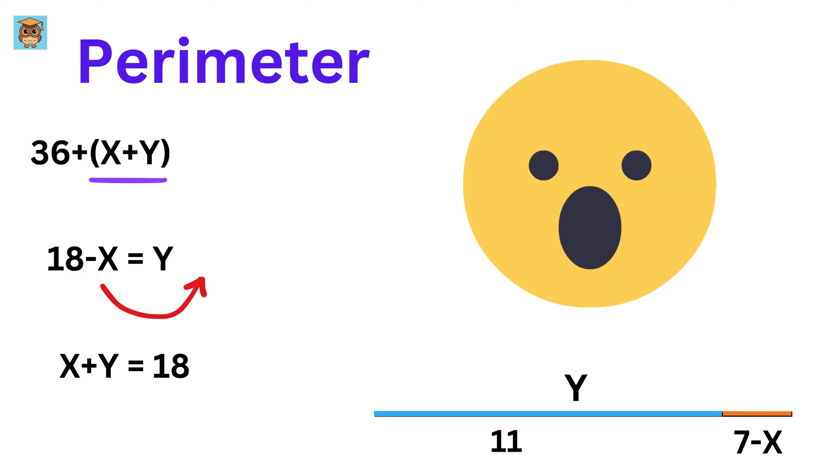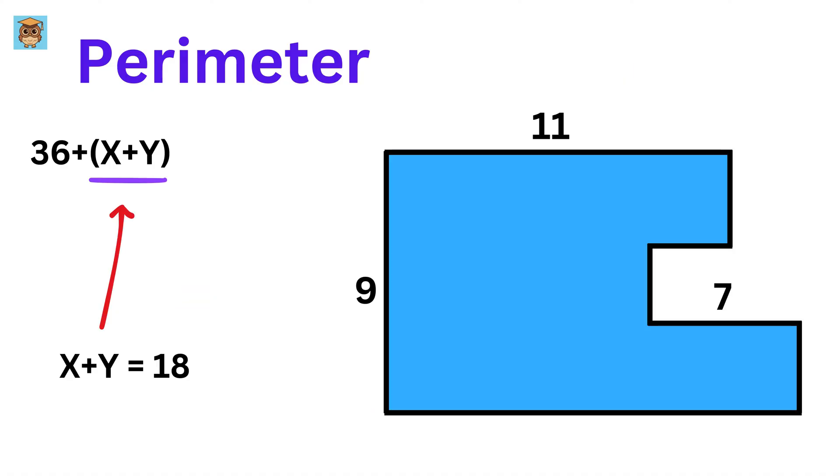That is simply amazing. Put it here, and we are done. The perimeter of this polygon equals 36 plus 18, or 54 units.